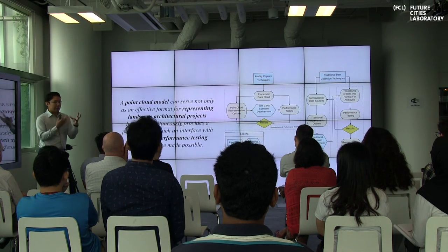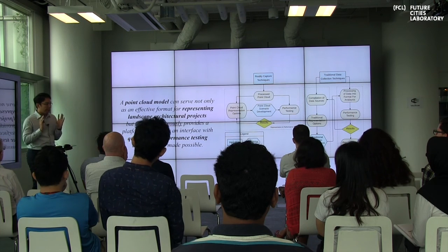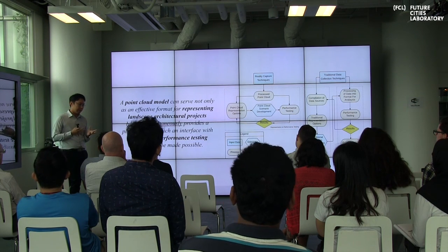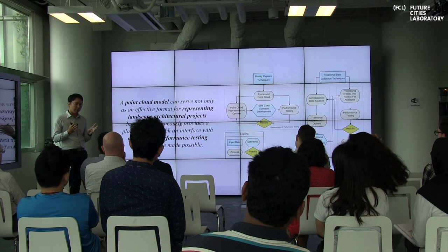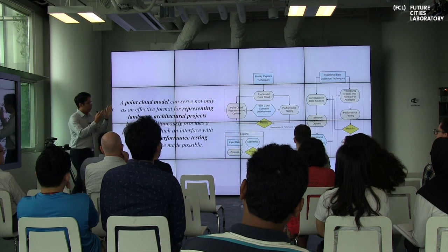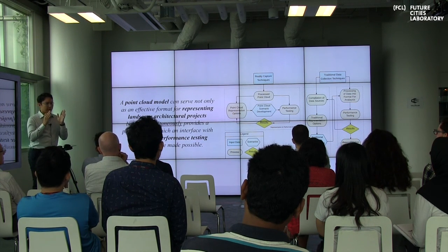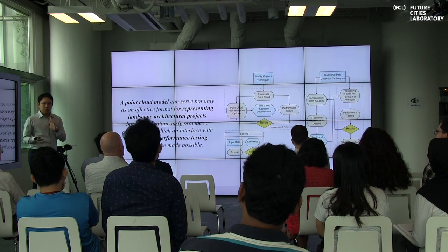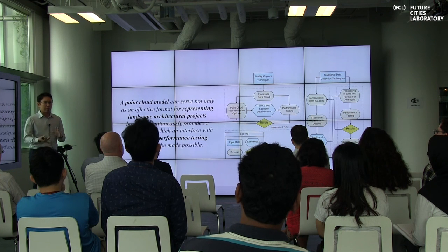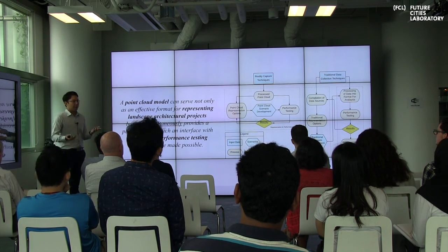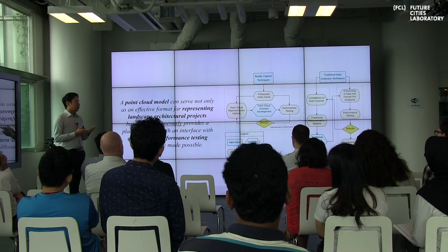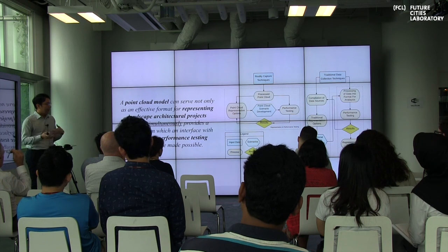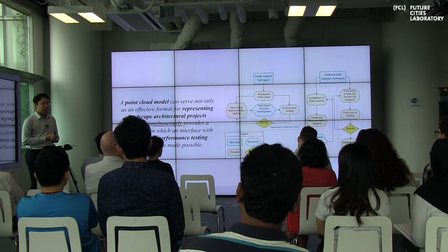Now that we understand the starting point is this high-resolution, three-dimensional point cloud data, my hypothesis is to try to use it simultaneously as a representative and performative format. Landscape representations and performance testing are generally separate schools of thought. Usually you had to jump through hoops, converting from one format to another — if you wanted to run a flood simulation through a landscape perspective, it is impossible. The hypothesis is that point clouds could be a single embedded format allowing you to do this.